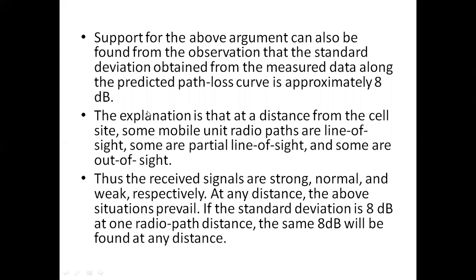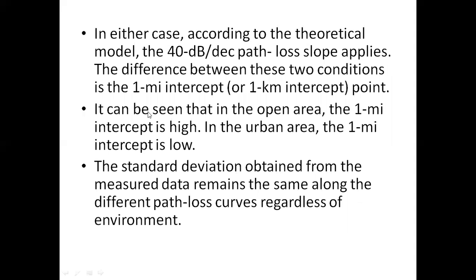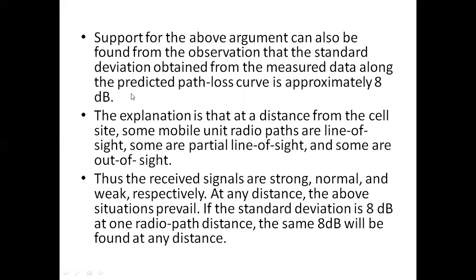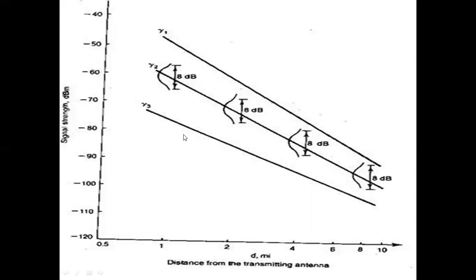Whatever the area - urban or suburban, whether the cell site is in or out of the city - the standard deviation is 8 dB only. From the figure we have three path loss curves: gamma 1, gamma 2, and gamma 3, representing curves from different areas. The x-axis shows distance from the transmitting antenna at one, two, four, and ten mile intercepts. At each intercept, the standard deviation is 8 dB.